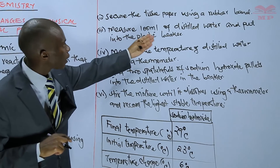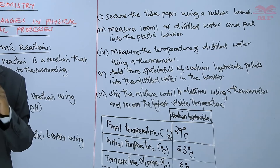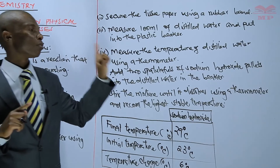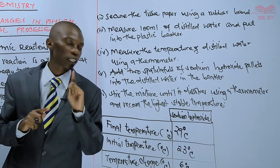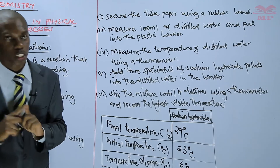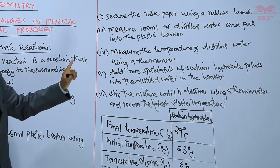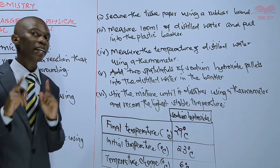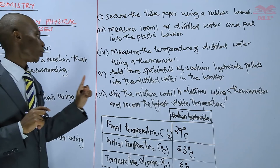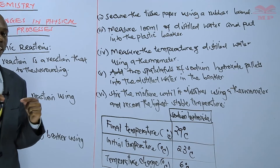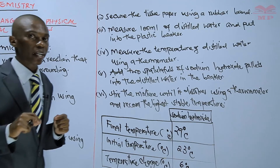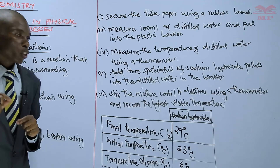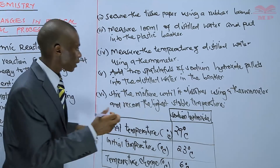Procedure three: measure 100 ml of distilled water and put it into the plastic beaker. Procedure four: measure the temperature of that distilled water using a thermometer, before you add the sodium hydroxide pellets. Procedure five: add two spatula fulls of sodium hydroxide pellets into the distilled water in the beaker. Lastly, stir the mixture using a thermometer and record the highest stable temperature.